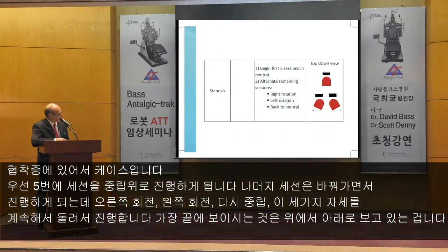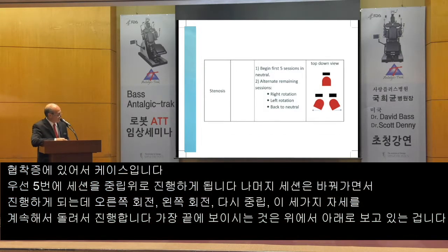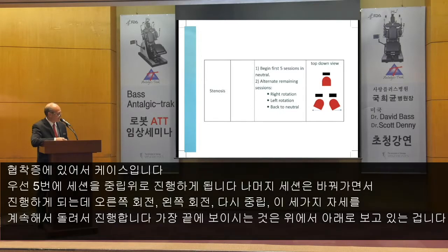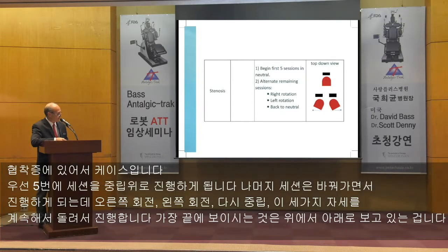For stenosis — specifically soft stenosis — begin the first five sessions in neutral. Then alternate remaining sessions between right rotation, left rotation, and neutral, cycling through these three postures each session.